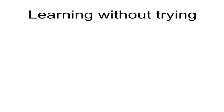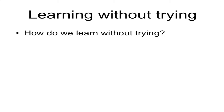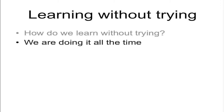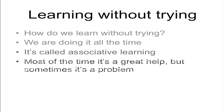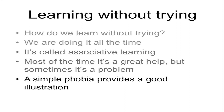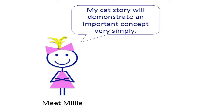So how do we learn without trying? It seems like quite a useful thing to be able to do. Well, actually we're doing it all the time — we just don't realise that we are. It's called associative learning and it has an adaptive purpose, which means it's helped us to survive. But sometimes it becomes maladaptive, which means it's developed unhelpfully. A phobia development is a good way to understand this.